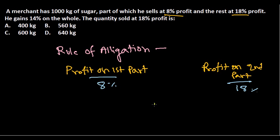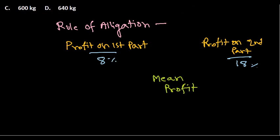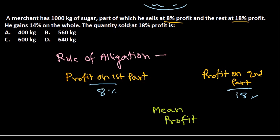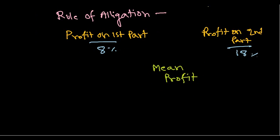...what we put here: always we put the mean value. Here is the mean profit—we put mean profit here in the middle. The mean profit is 14%. So here we put the value of mean profit, 14%. Everything is in percent...